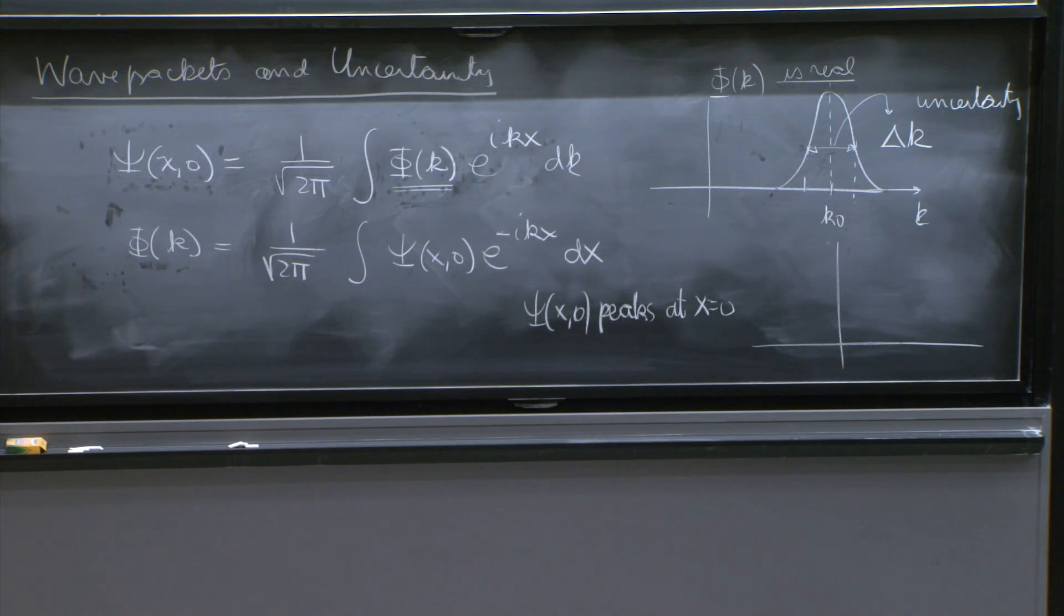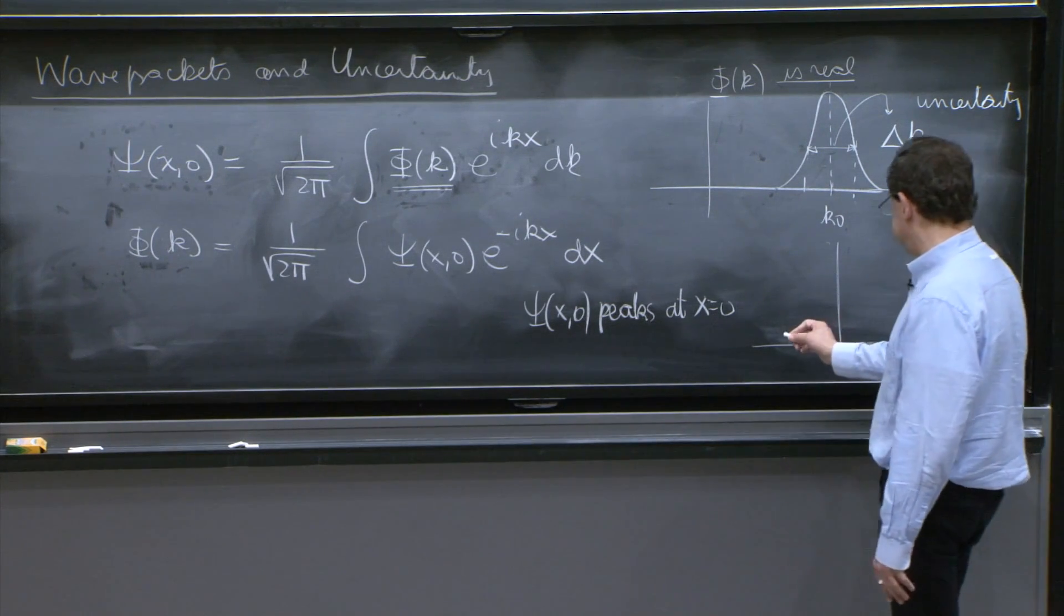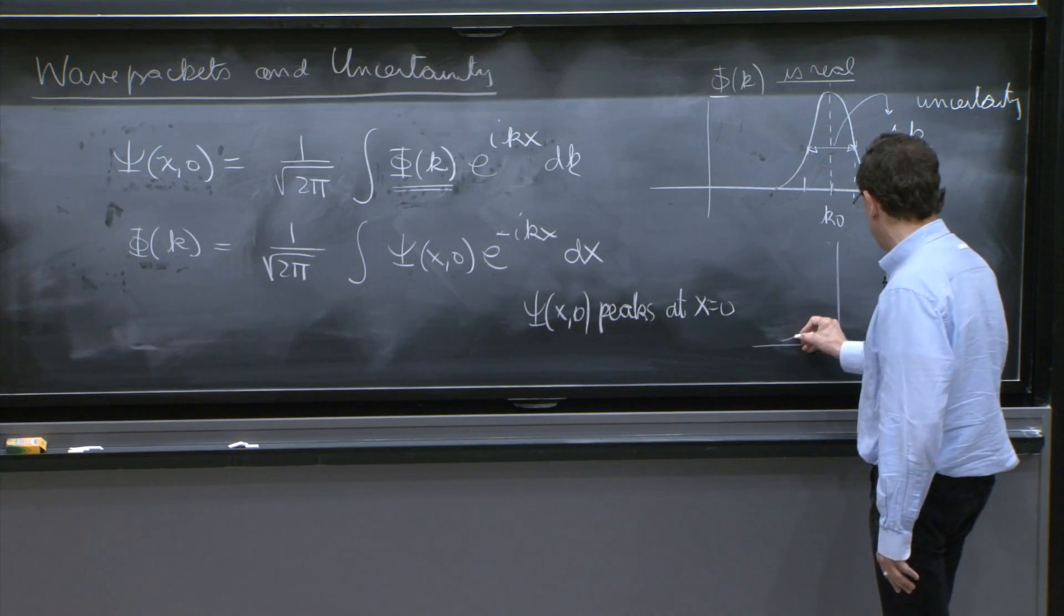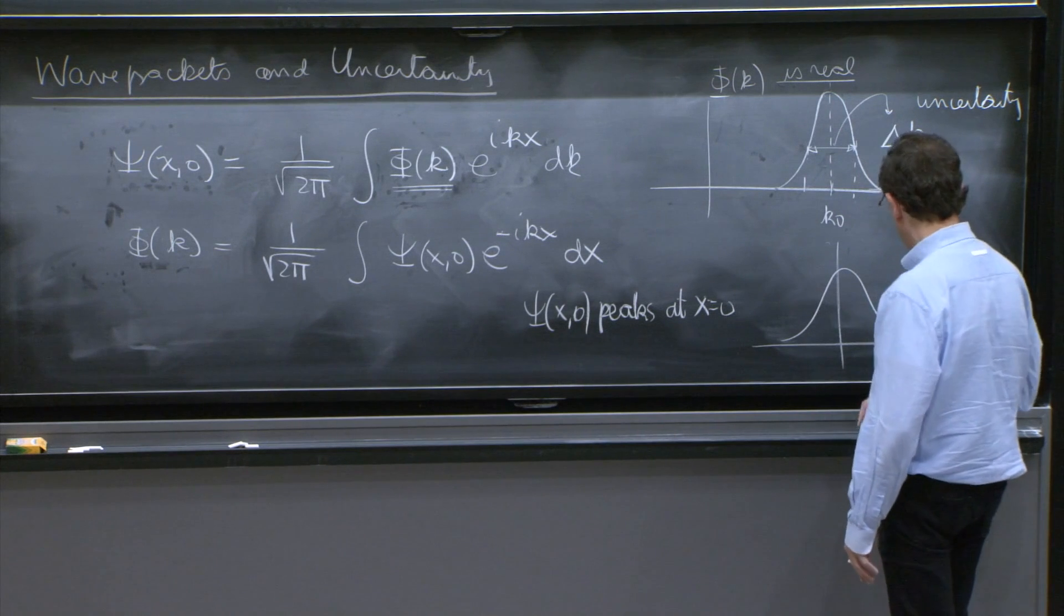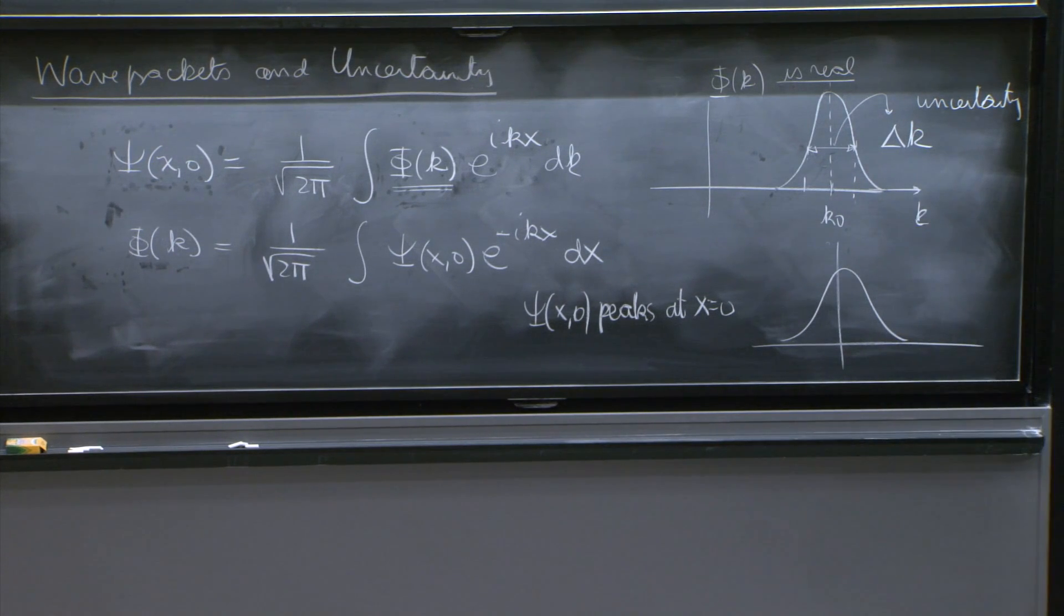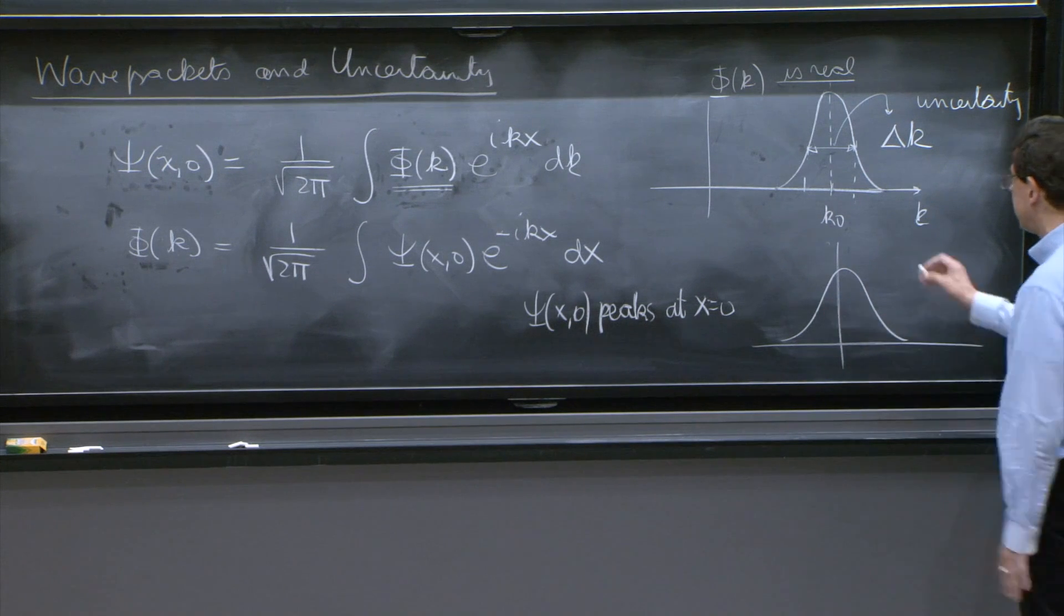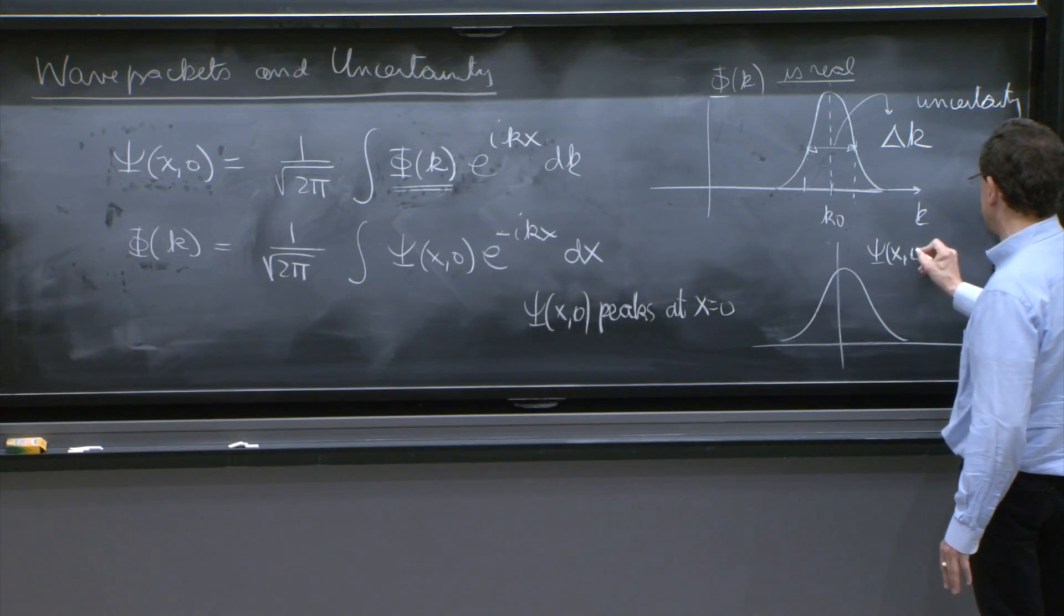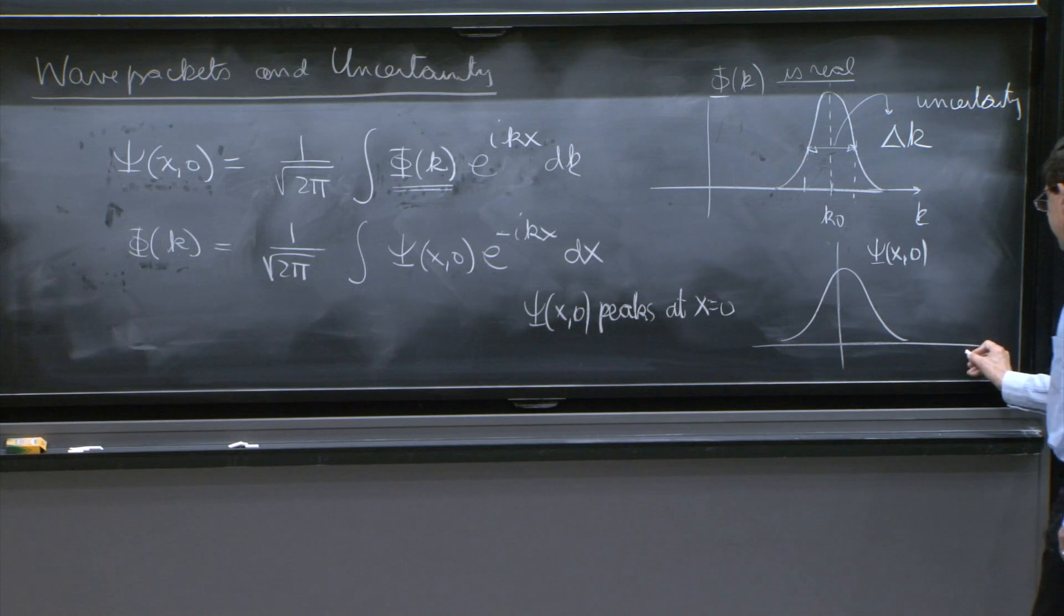And so you would have a picture here. And if I have a picture, I would say, well, it peaks around x equals 0, so OK, it's like that. And here, we're going to have some uncertainty. Here is ψ of x at 0, and here is x.